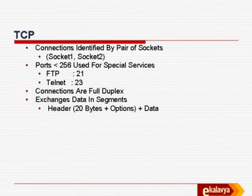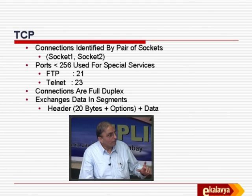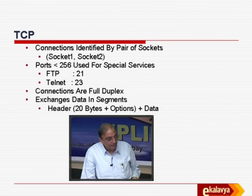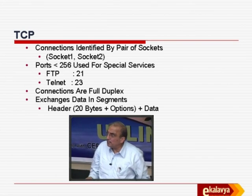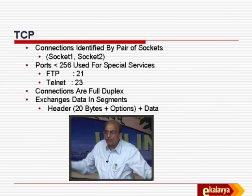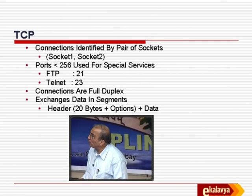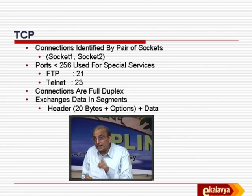Ports with values less than 256 are used for special services — nothing truly special, just commonly used applications which have been assigned port numbers. If you are doing FTP (File Transfer Protocol), it will always use port 21. Telnet — making your machine a terminal to another machine — will always use port 23. Connections are called full duplex, meaning information can flow both ways. It is guaranteed that you always know what the last correctly received packet was.